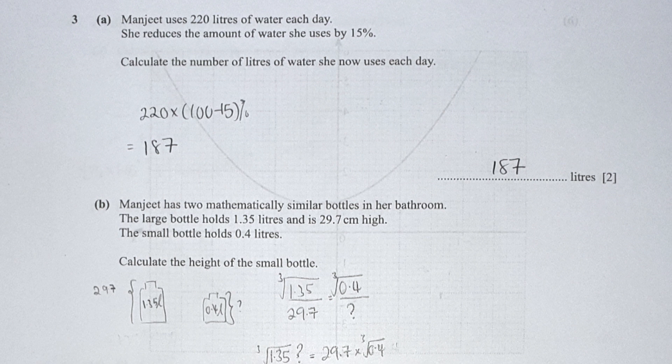Question 3 part a: 'reduces' is the keyword, so I took 100 percent minus 15 percent, giving 85 percent. So 220 times 85 percent gives 187 liters.